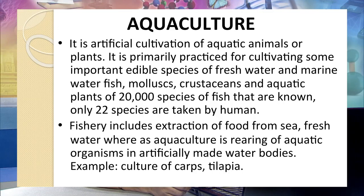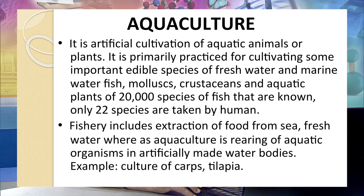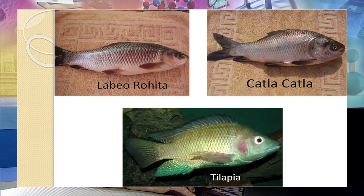Aquaculture is our next item. It is the artificial cultivation of aquatic animals and plants, primarily practiced for cultivating important edible species of fresh water and marine water. Fish, mollusks, crustaceans, and aquatic plants are utilized for this purpose. Of the large variety of fish, we usually consume only 22 species. Fishery includes extraction of food from sea and fresh water, whereas aquaculture is the rearing of aquatic organisms in artificially made water bodies — examples include culturing rohu, tilapia, and katla fish.